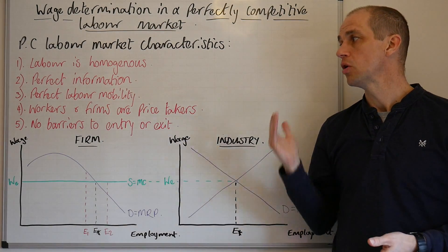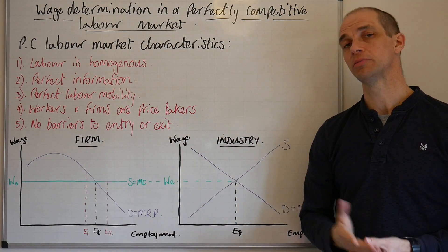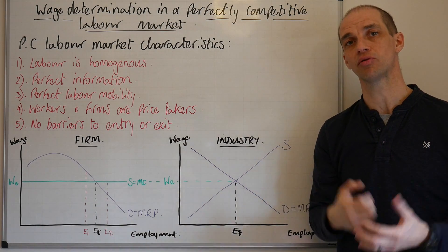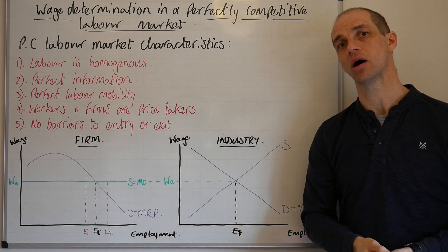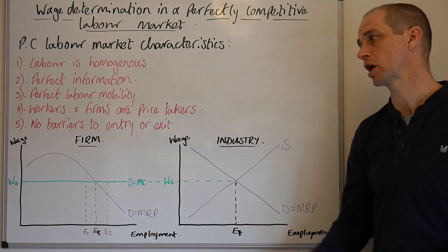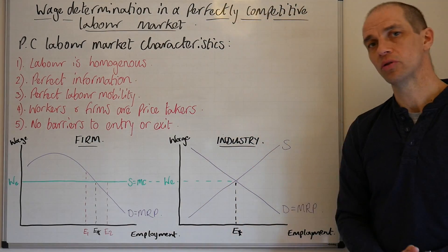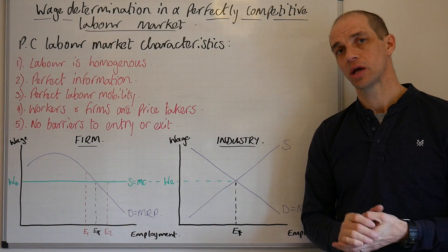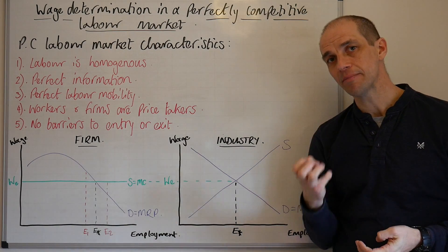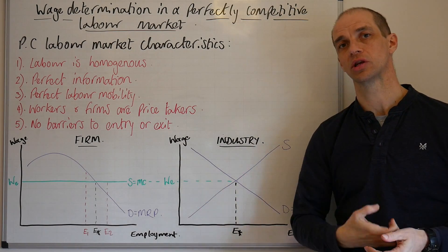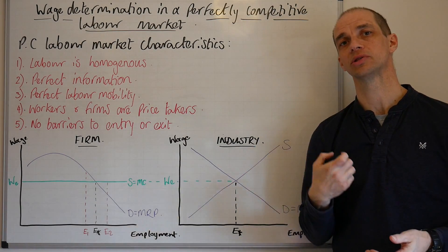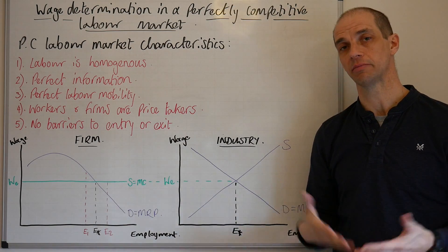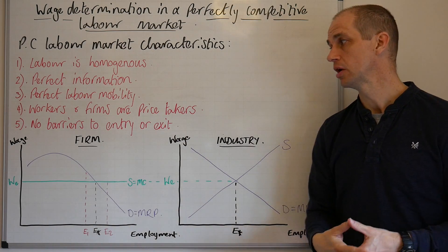Number four: workers and firms are price takers and they have to accept the given price from the industry as a whole. Finally, we've got no barriers to entry or exit. That simply means that workers can come and go as they please, and firms can come and go as they see fit.